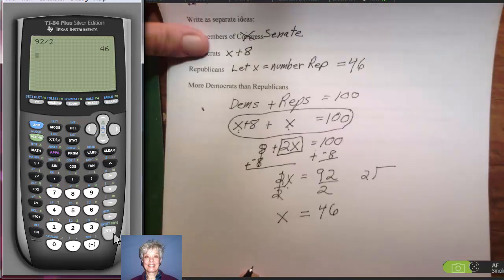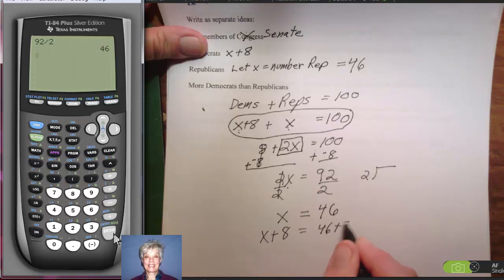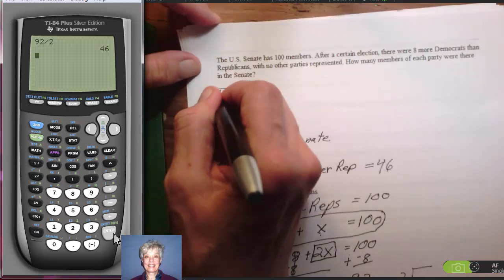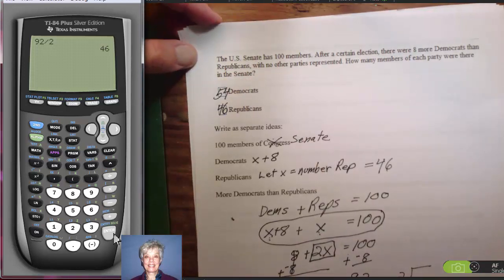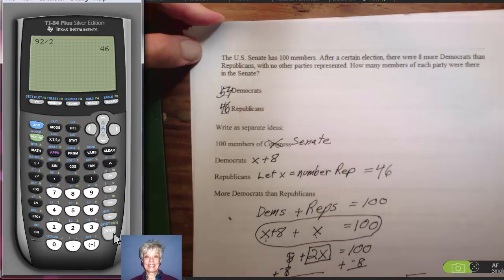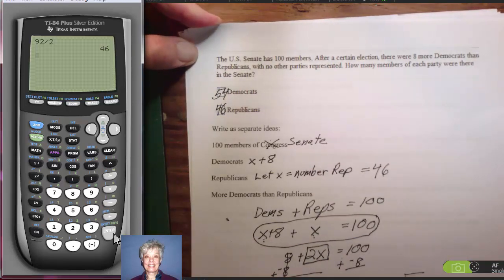Now, since the number of Democrats are X plus 8, I have to add 8 to 46. Since X is 46, this is going to be 46 plus 8, which is 54. So, there are 54 Democrats, 54 Democrats. Eight more Democrats than Republicans.